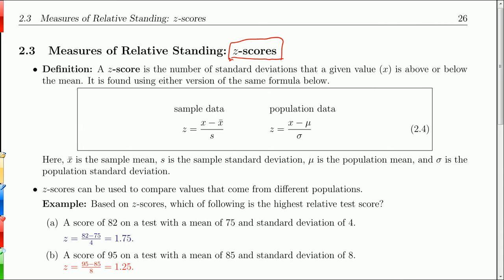They're very common. That's how we measure things in terms of standard deviations. But it really is just a measure of relative standing - how far something is from the mean with respect to the standard deviation. And it comes in two different flavors of the exact same formula.